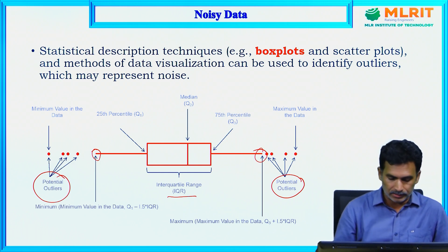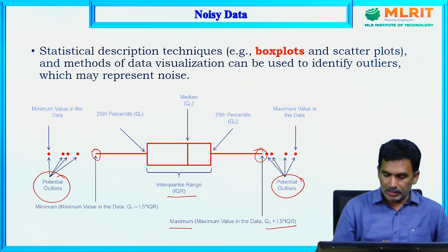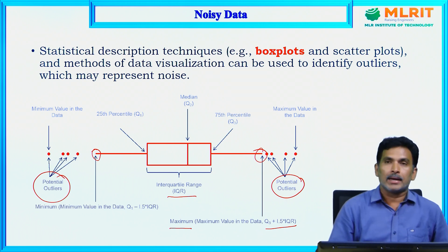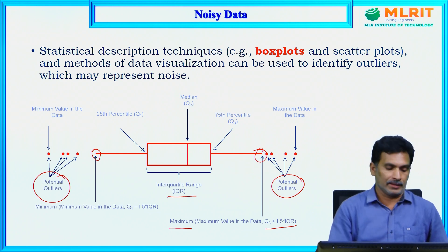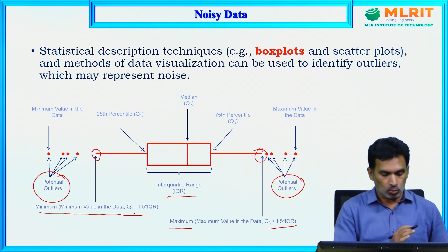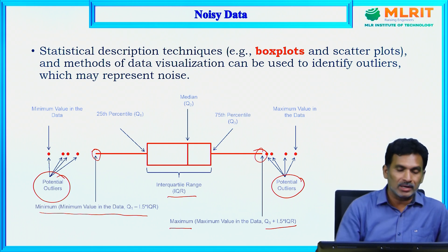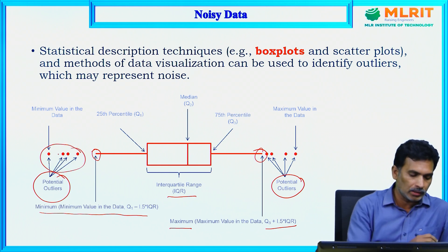Using formulas, the maximum value in the data is Q3 plus 1.5 times the IQR (interquartile range). Any data point beyond this value would be treated as an outlier. Similarly, the minimum value in the box plot is Q1 minus 1.5 times the interquartile range. Any value less than this would also be considered a potential outlier.